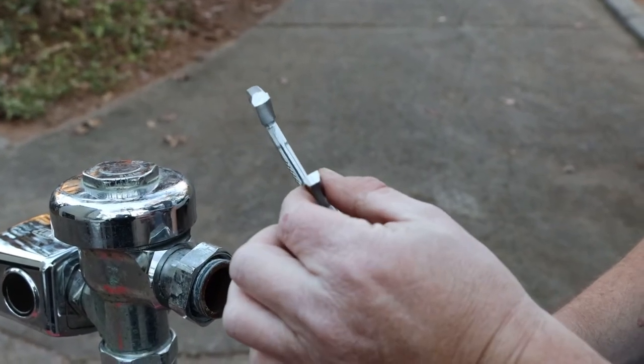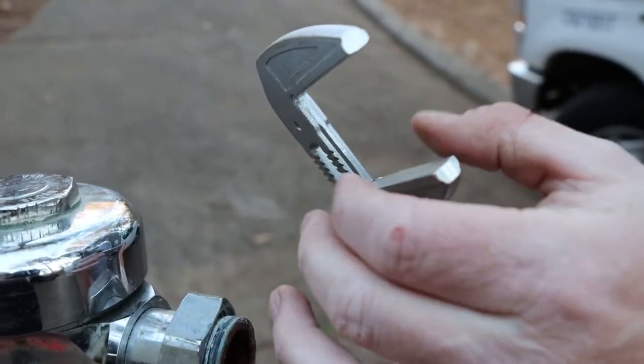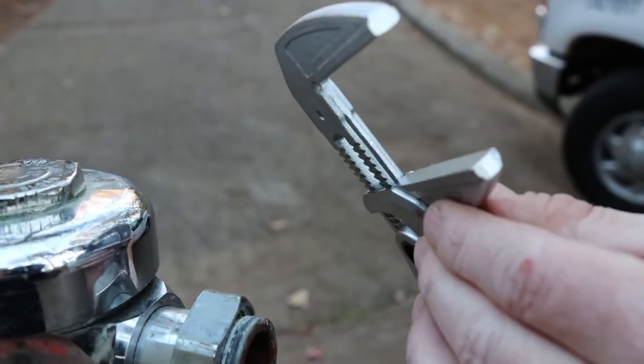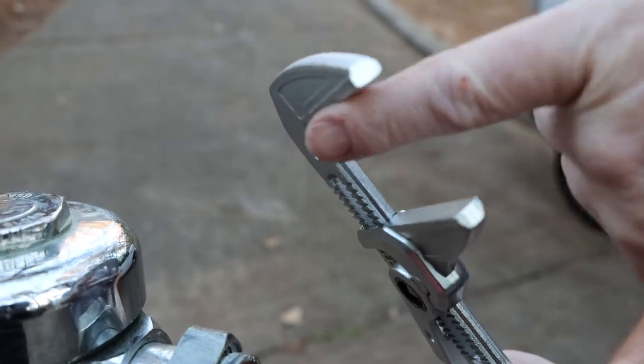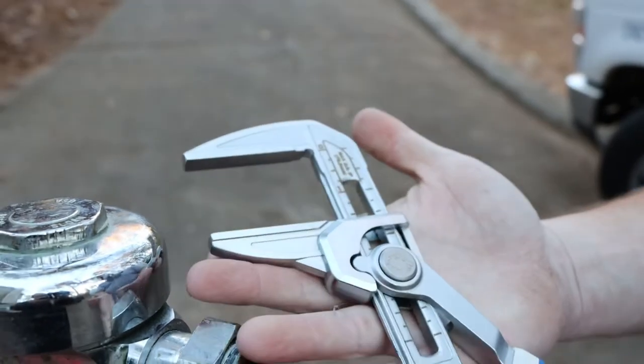One other key feature is the width of the jaw, so it gets you into tight spots. Really cool, really cool deal. So no teeth, no marring, no mess. Check them out guys, Lennox pliers wrench.